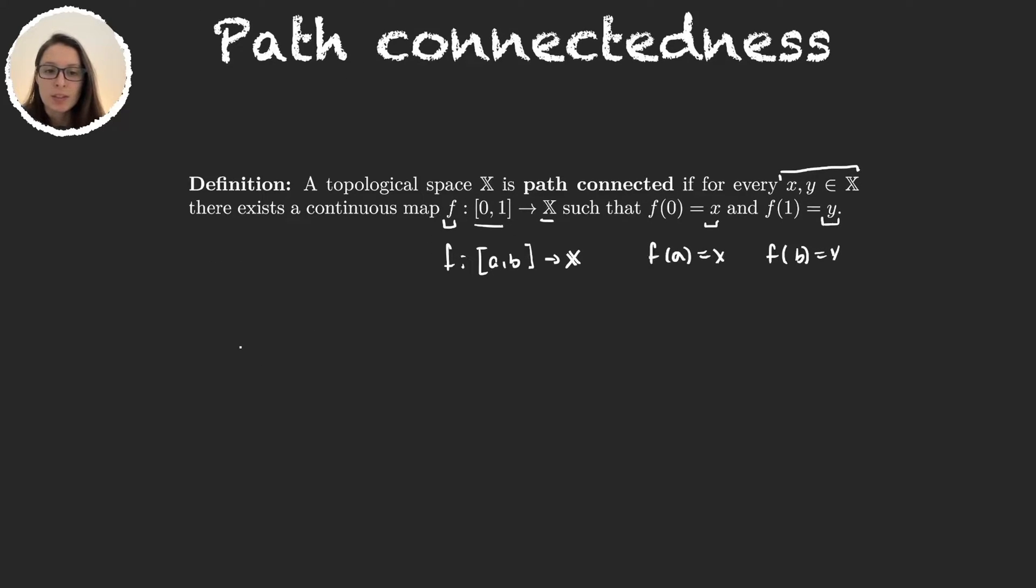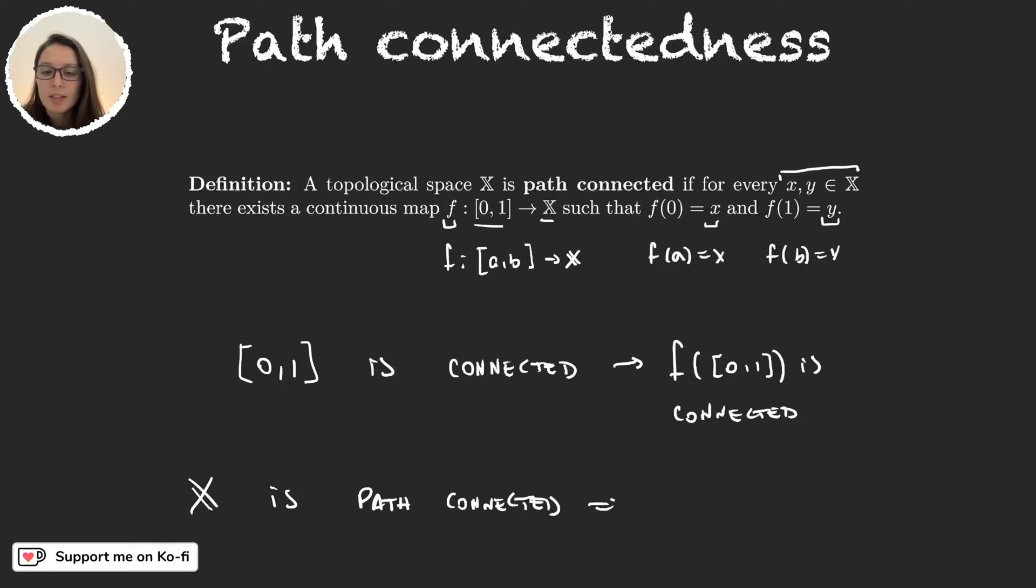So [0,1] is connected and so this tells us that f([0,1]) is connected and so every time I grab two points I can see that one subspace of X is connected. So clearly path connectedness implies connectedness, so this means that if X is path connected then X is obviously connected.